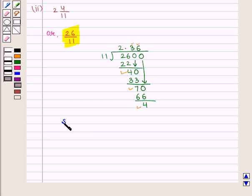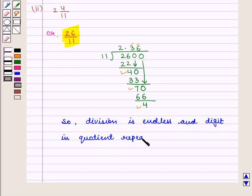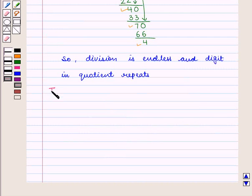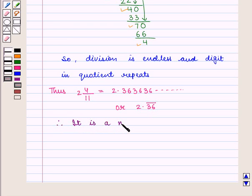So here division is endless. And thus we have 2 and 4 by 11 is equal to 2.3636 and so on, which can also be written as 2.36 bar. And therefore we conclude that it is a non-terminating decimal.